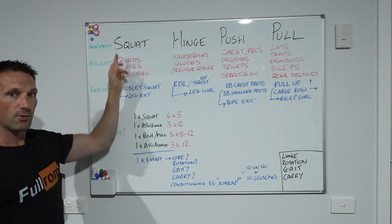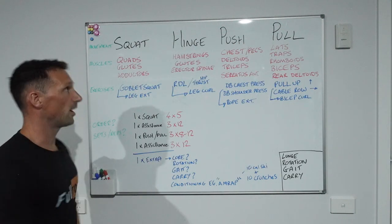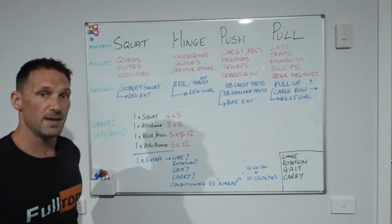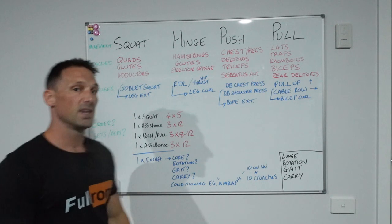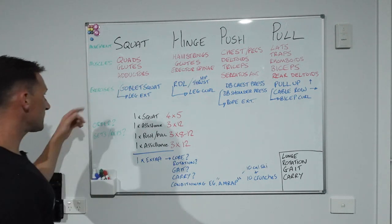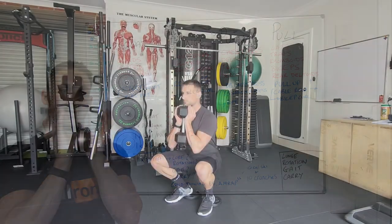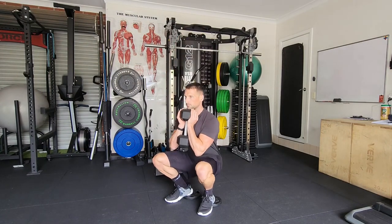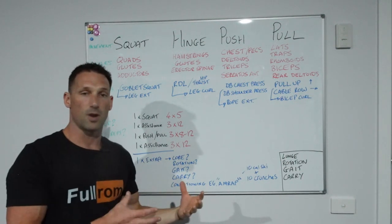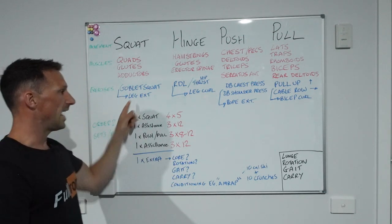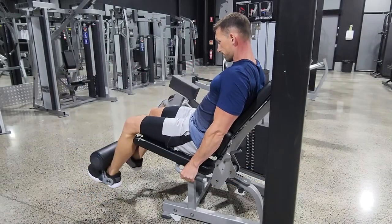If we take a look at the squat: the main muscle groups involved are the quadriceps — front of your thighs — glutes, which perform the hip extension component, and adductors, the inside of the thighs, depending on the variation used. For a squat pattern exercise, we may use a goblet squat — holding a dumbbell in front — a nice, easy beginner squat variation. We can also look at an assistance exercise like a machine seated leg extension, where we isolate the movement at the knee to train the quads.